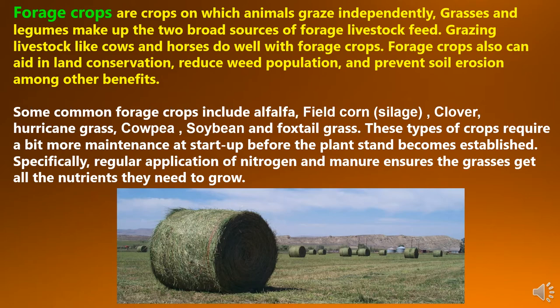Forage crops also can aid in land conservation, reduce weed population and prevent soil erosion, among other benefits. Some common forage crops include alfalfa, field corn which is used for silage, clover, hurricane grass, cowpea, soybean and foxtail grasses. These types of crops require a bit more maintenance. It starts up before the plant strength becomes established. Regular application of nitrogen and manure ensures the grasses get all the nutrients they need to grow.